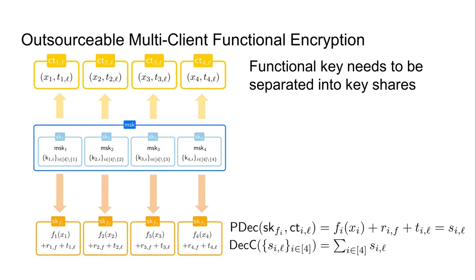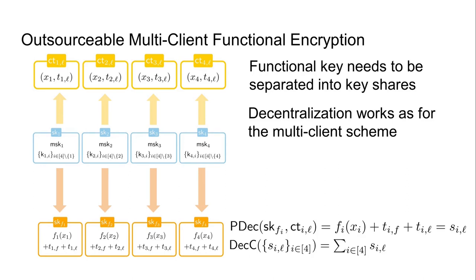Our presented multi-client functional encryption scheme allows for outsourcability by separating the functional key into different functional key shares enabling generation of decryption shares. We output the different keys for the single-input functional encryption instances to the different servers and define the partial decryption procedure as the decryption procedure of the single-input scheme. The output decryption share is blinded using the secret share of the functional key and the secret share of the ciphertext label. For reconstruction, the different decryption shares are summed up by the function evaluator. It is also possible to combine decentralization and outsourcability to get a decentralized outsourcable scheme using PRF-generated non-interactive secret shares.